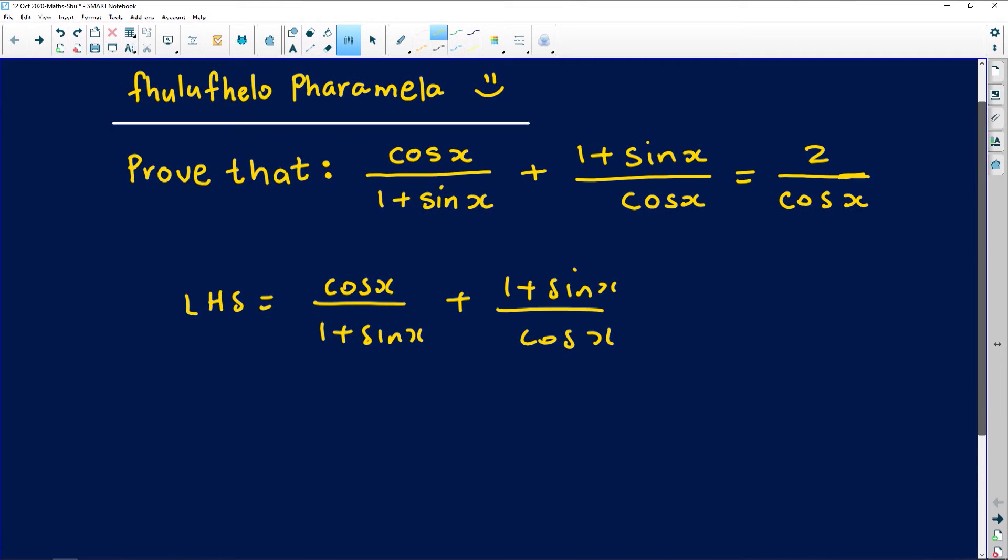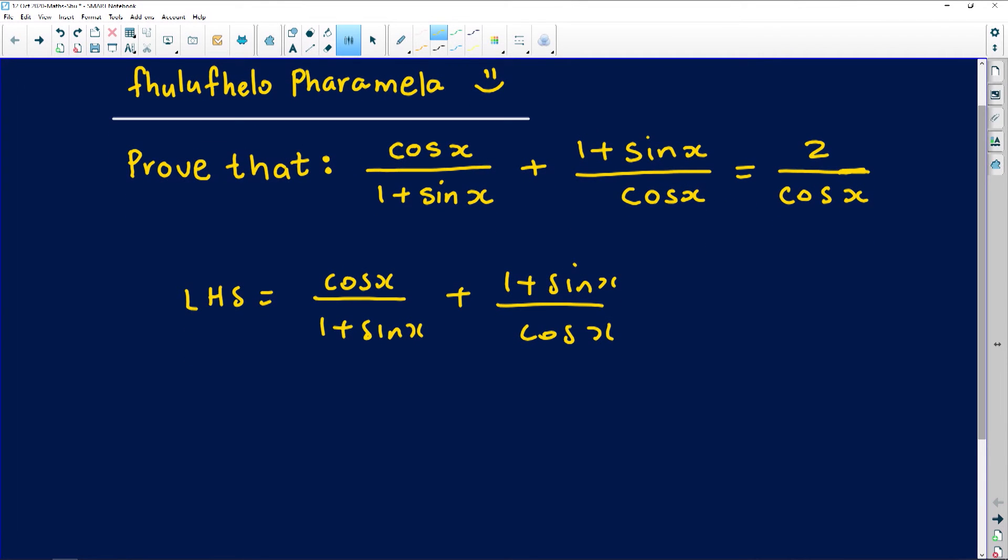Now identities are terribly simple, but for some weird reason grade 11s and grade 12s struggle to work with them. Why? Because they're missing an important element. In grade 11 you were taught the squares identity. The tools that I have - I've got the tool that says the sine of x divided by the cos of x is as good as the tan of x. That's the first tool in identities.